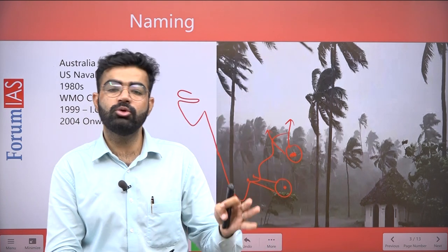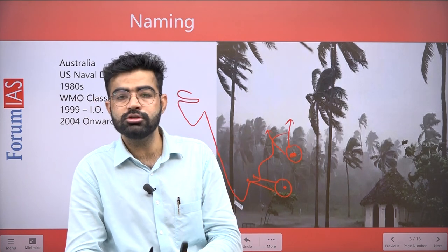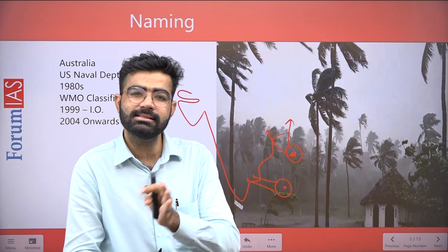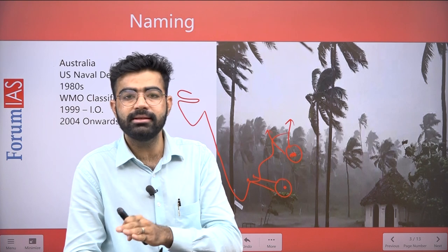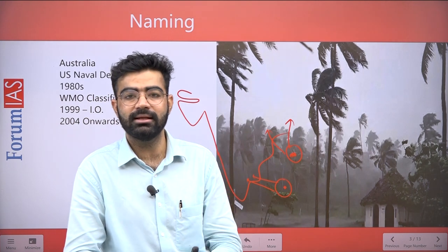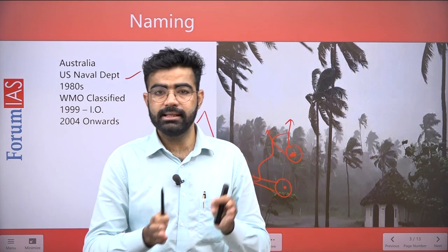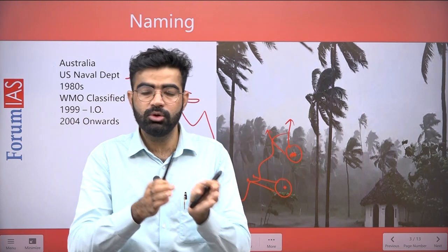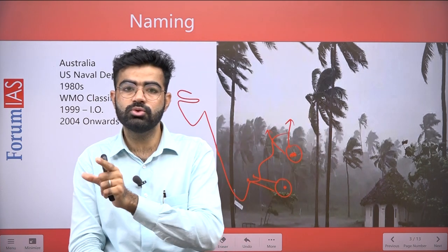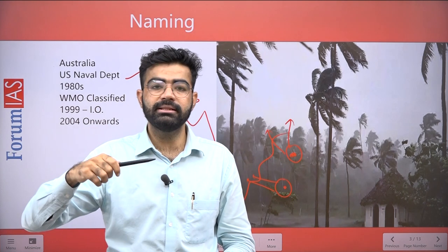Until 1999, cyclones originating in the ocean were not given names. It was only in 2000 that it was decided that we should also provide names to these tropical events. Consensus was reached, especially among Indian Ocean countries impacted — including Pakistan, India, and others. Naming started in 2004. It was initially 8 countries, but now there are 13 countries impacted by the Indian Ocean that participate. The WMO regional organization situated in New Delhi provides the names to these cyclones based on a list prepared by these 13 countries.